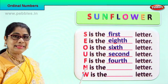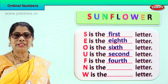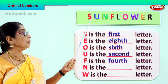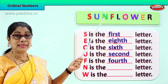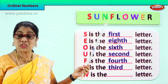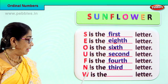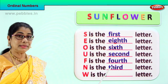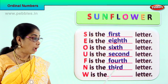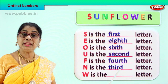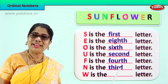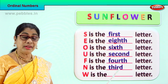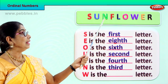Now let's look at another letter — N. What is the position of that letter N? First, second — N is in the third position. Third. Spell third: T-H-I-R-D, third. N is the third letter.